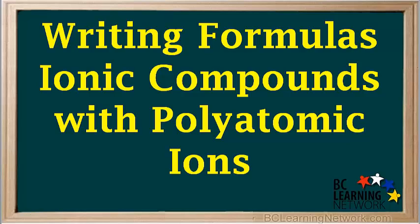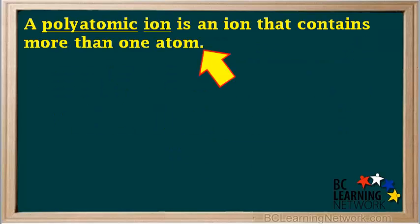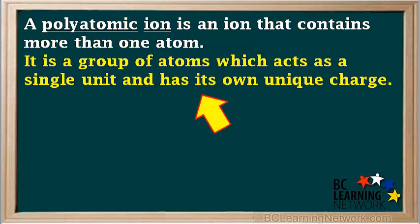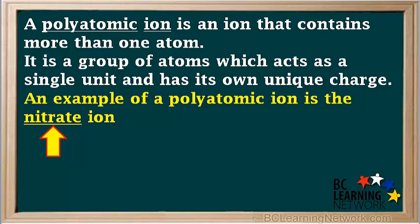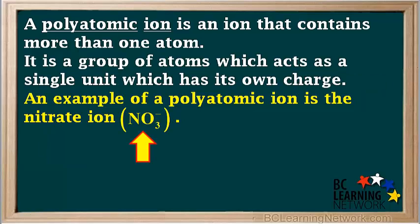This video will show you how to write chemical formulas for ionic compounds that contain polyatomic ions. A polyatomic ion is an ion that contains more than one atom. It can also be thought of as a group of atoms which acts as a single unit and has its own unique charge. An example of a polyatomic ion is the nitrate ion, which has the formula NO3 and has an overall charge of negative 1.